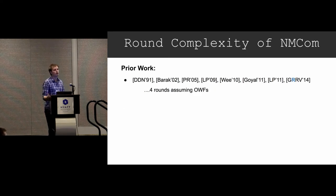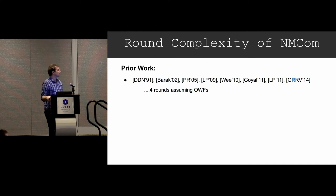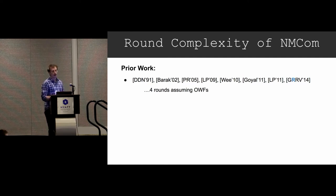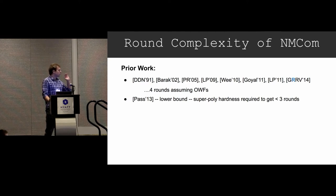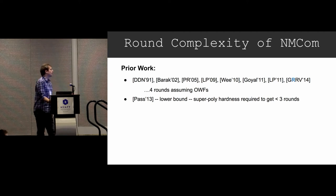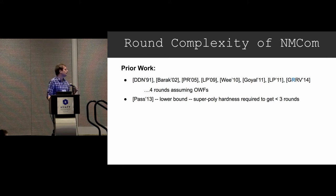There's a lot of prior work that's gone into building non-malleable commitments. The main efficiency measure we use is round complexity, and you're trying to design protocols with a decreasing number of rounds. There's been prior work going back to the early 90s. Roughly, if you looked five years ago at the situation, we had four-round constructions of non-malleable commitment assuming that one-way functions exist.